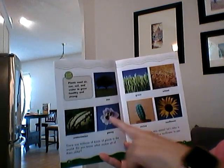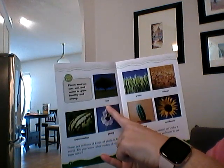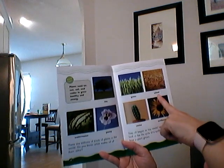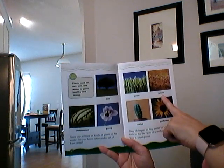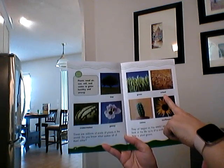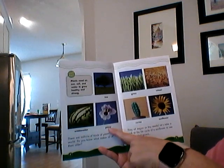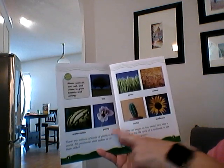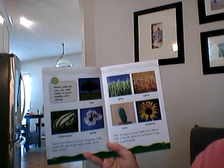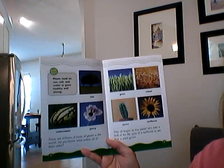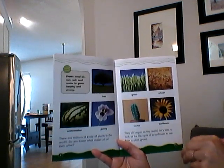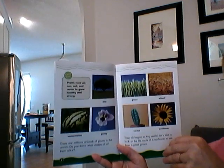Look at all these different kinds of plants: trees, grasses, wheat. We use wheat to make bread and crackers. Watermelon, pansies, cactus, and sunflower. After this book is over, maybe you can go outside and take a look and see how many different kinds of plants you can find.